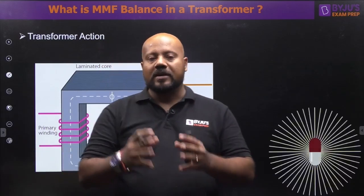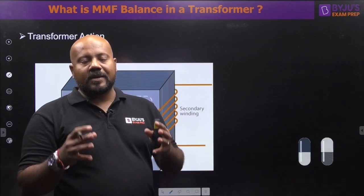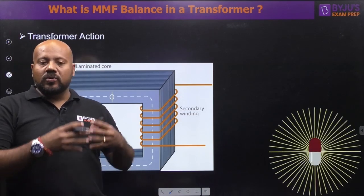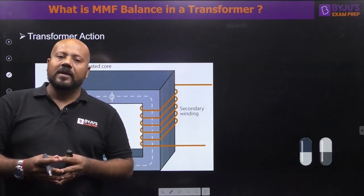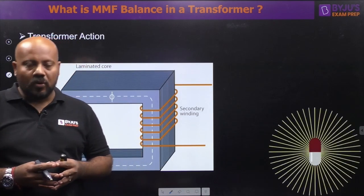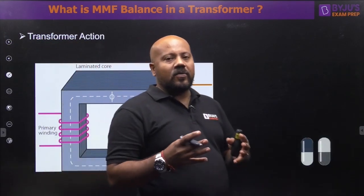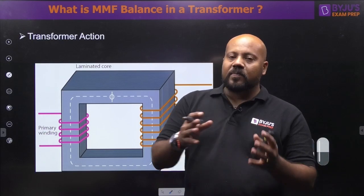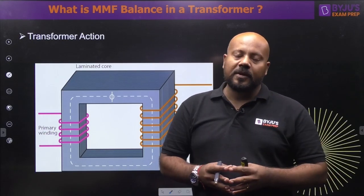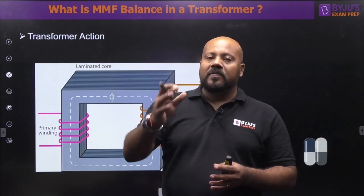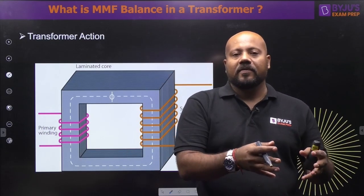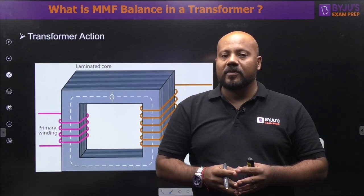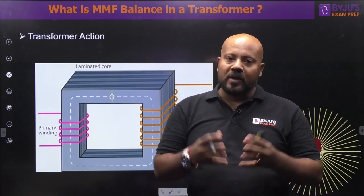The most simple understanding of a transformer is that there is a core, and in that core we have two windings — one we are calling the high voltage winding and the other the low voltage winding. We can also term these as primary and secondary windings, but I prefer the high voltage and low voltage terminology, because by counting the number of turns you can easily identify which is which, since the EMF induced per turn is the same for both windings.